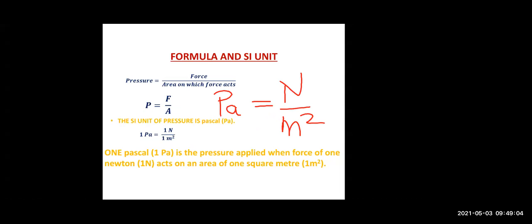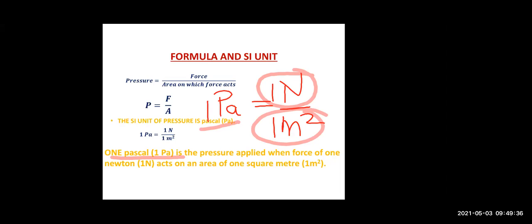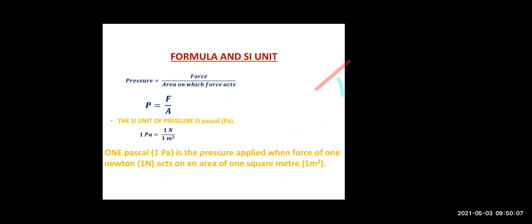Now, if I want to define one Pascal: one Newton is the force which we have applied, and one metre square is the area on which we are applying the force of one Newton — then the pressure that will be produced will be one Pascal. So how will you define one Pascal? One Pascal is the pressure produced when the force of one Newton acts on an area of one metre square. This is a very important definition — the definition of one Pascal.